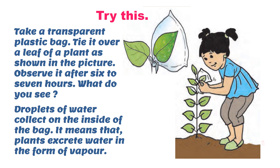Try this activity: take a transparent plastic bag and tie it over a leaf of a plant as shown in the picture. Observe it after six to seven hours. You will find tiny droplets of water on the bag, which means that some substances from the leaves have been thrown out. This tells us that even plants excrete.